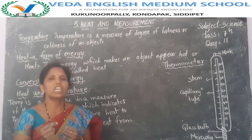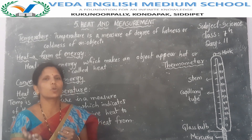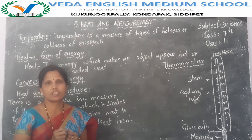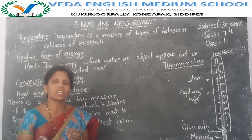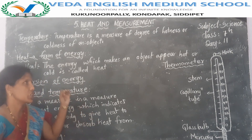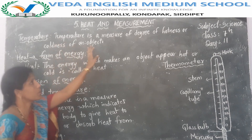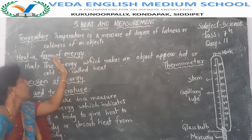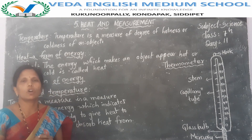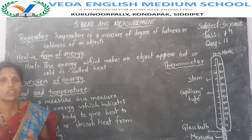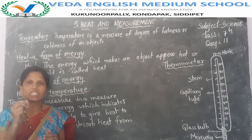We know that some objects are hotter than other objects, and some objects are colder than other objects. How do you know which objects are hotter or colder? We need a reliable method to decide the hotness and coldness of an object. So we express the hotness and coldness of an object in terms of temperature. Temperature is a measure of degree of hotness or coldness of an object.